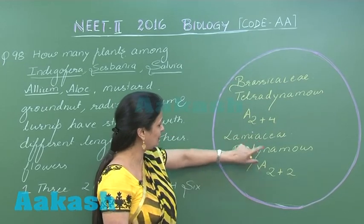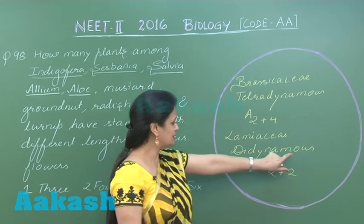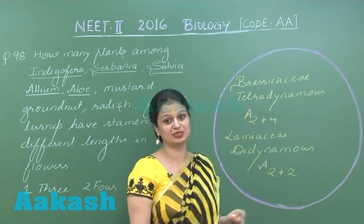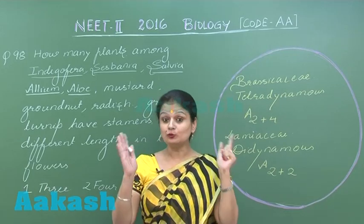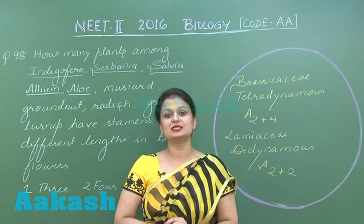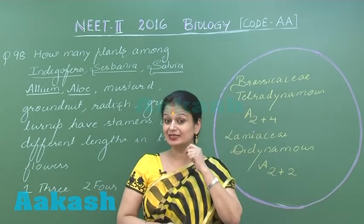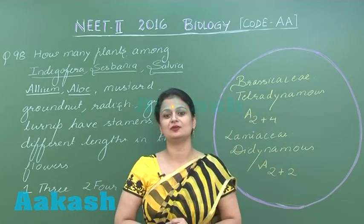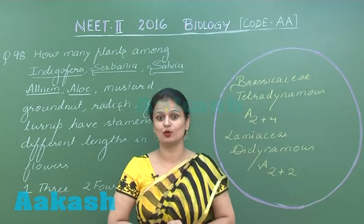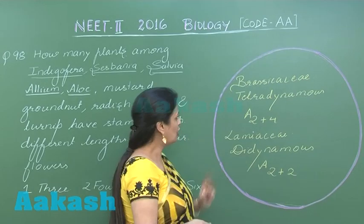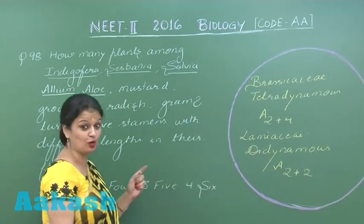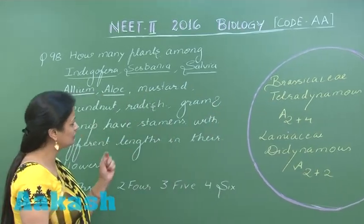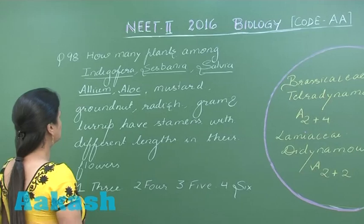In the Lamiaceae family, there is the didynamous condition. The outer two stamens are long and the inner two stamens are small. So we have to look for the members which belong to these two families.